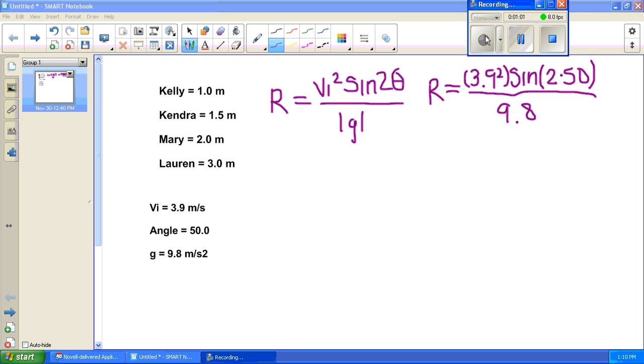Well, the range equation states that it's velocity squared sine 2 theta divided by g, the gravity. And for that, the 3.9 will go on the top right here, and you square that.